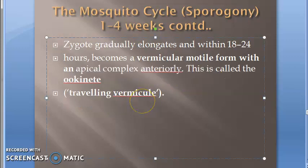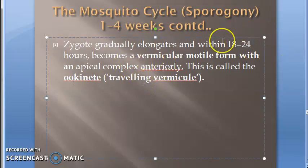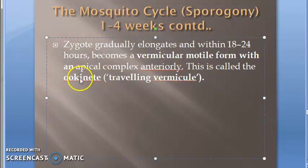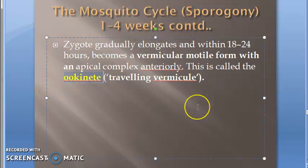This vermicular motile form has an apical complex anteriorly and is called an ookinete. The apical complex is present because it has to bind and penetrate — and what it is going to penetrate is the stomach epithelium of the mosquito.